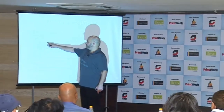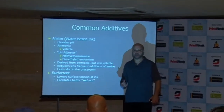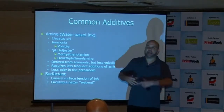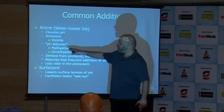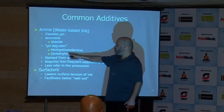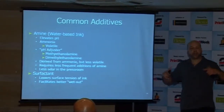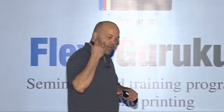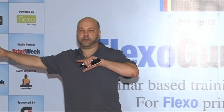To elevate the pH you might use ammonia, but plain ammonia is very volatile — it comes out of the water mix quickly, you have to replenish it frequently, and it can make for an unpleasant environment with the smell. There are other amines, for example one called methyl ethanol amine and another called dimethyl ethanol amine, that are more stable. They still have the property of elevating the pH but they don't volatilize as quickly, so you have a more stable ink over time.